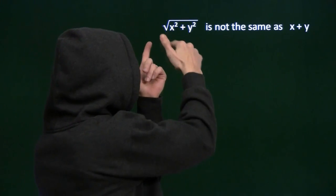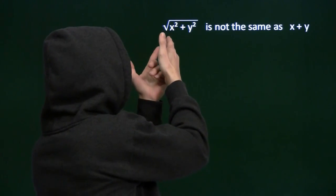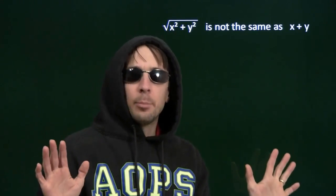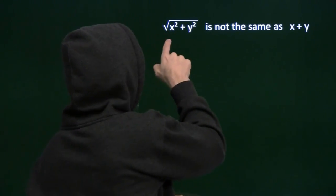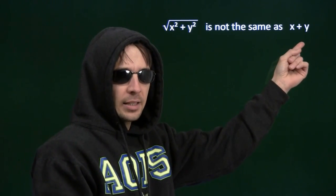And this is what we got here. We got a square root of a sum. We can't just break that up into the square root of the first thing, which here would be x, plus the square root of the second thing, which here would be y. Can't break it up like that. The square root of the sum, x squared plus y squared, is not x plus y.